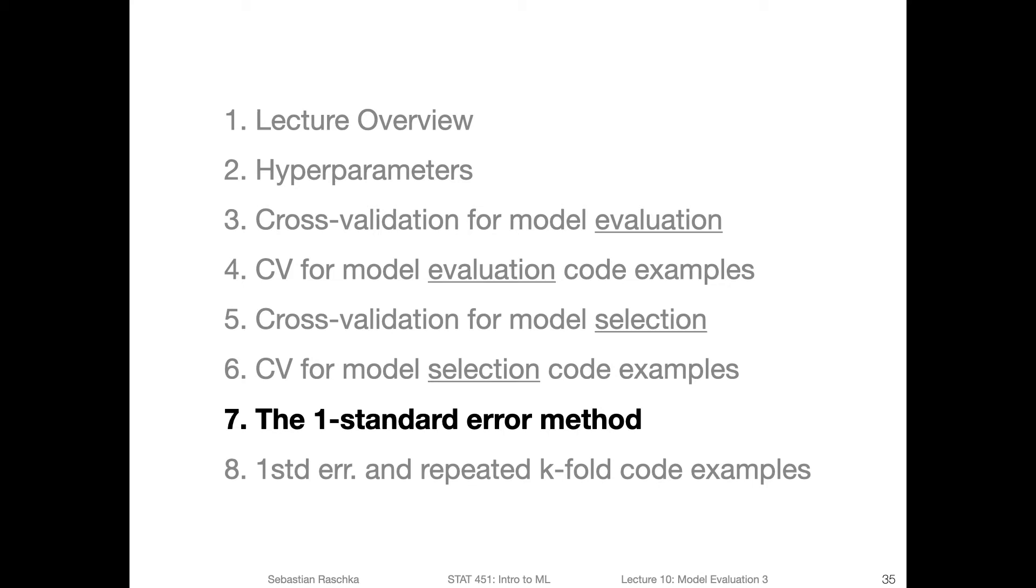Technically, we covered everything I wanted to cover about k-fold cross validation and model selection. However, I realized there's one more topic I wanted to cover: the one standard error method. It's related to the fact that we've seen in the last coding example where we sometimes find that multiple hyperparameter settings perform very similar or even completely identically well. So which one should we choose?